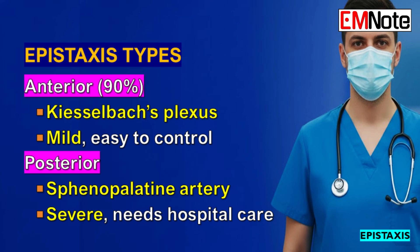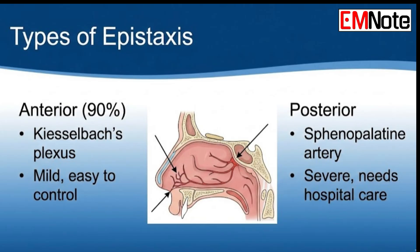So let's start with that fundamental classification. When a patient comes in, how do we divide epistaxis into those two categories? It's all about the nasal septum — that's the dividing line. It's either anterior, in the front, or posterior, in the back.